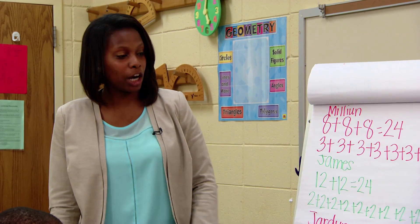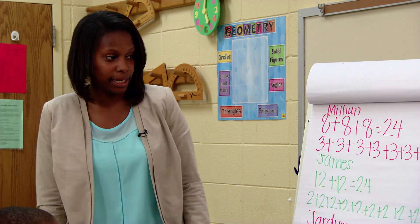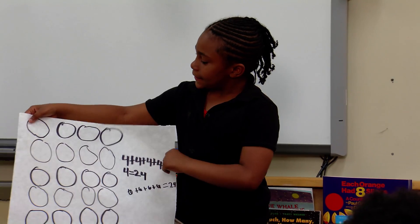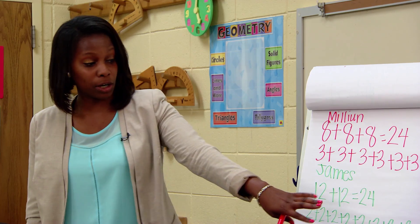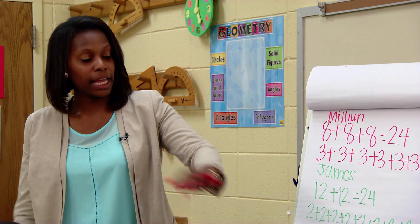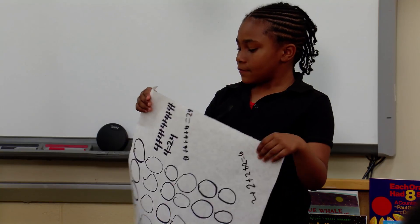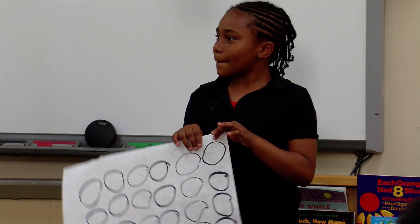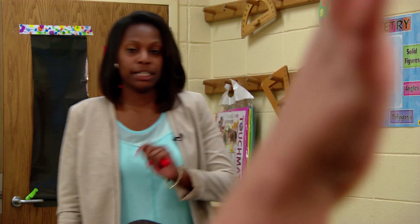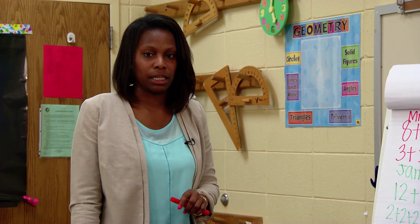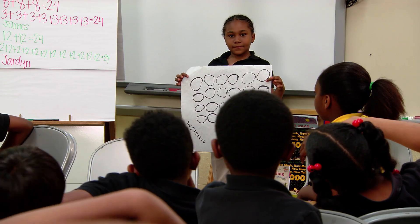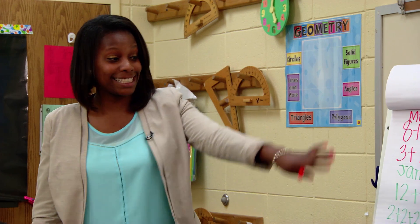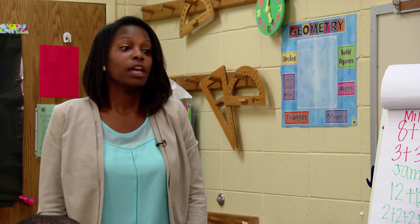Jordan, explain what you did on that array. I put four circles in six rows. She put four circles in six of her rows. Now Jordan, turn your picture. Raise your hand if you can tell me what changed about Jordan's array. Jada? Her columns. What happened to her columns? Her columns were six — now she has four in each column.